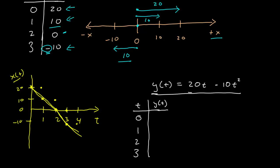If I plug in 0 into this function I get 0. If I put 1 second into this function I get y equals 10. If I put 2 into this function, that's 40 minus 40, that's 0. And put 3 into that function I get negative 30, 60 minus 90.